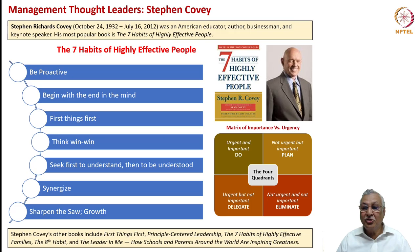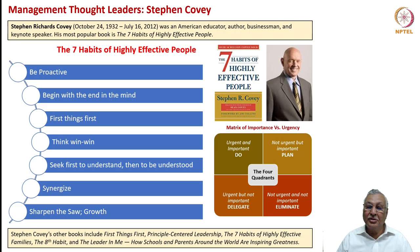And sharpen the saw — aim for growth, be competitive, do the right things in a competent way. Covey also suggested that everybody should look at what they need to do in terms of a matrix of importance versus urgency, proposing four quadrants.